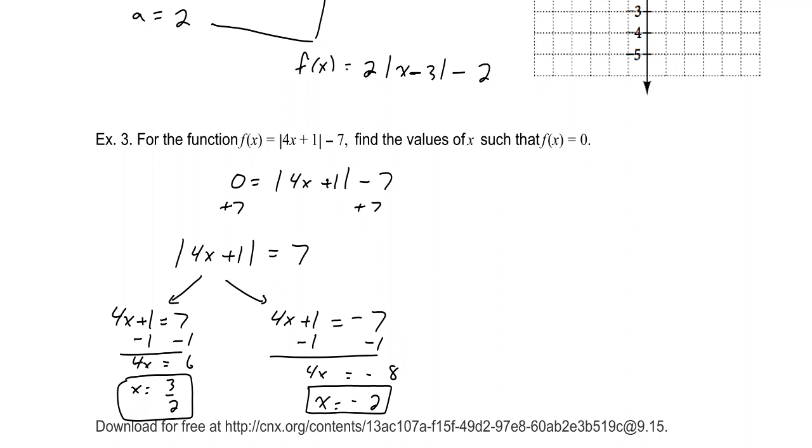So our two solutions are x equals 3 over 2, and x equals negative 2. Those are the x values that will make the output 0. That is the end of this section. Remember, for more examples, you can check out the textbook. You can also check out 2.6 and 2.7 in the textbook, OpenStax College Algebra.